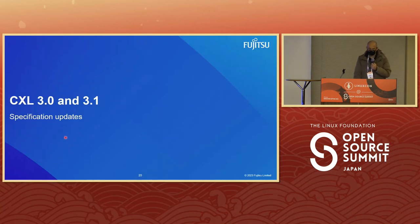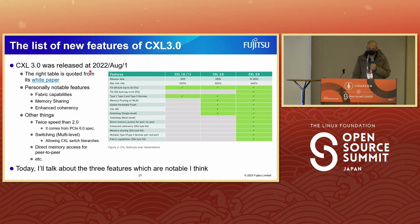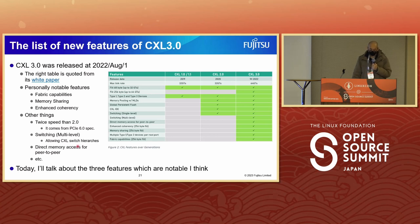Next section is CXL 3.0 and CXL 3.1 specification updates. Here is a list of new features of CXL 3.0, released one year ago on August 1st. The right table is quoted from the white paper. Personally, notable features are fabric capabilities and memory sharing and enhanced coherency. CXL 3.0 is twice the speed of 2.0, coming from the PCI Express 6.0 specification. Multi-level switching supporting CXL switch hierarchies is supported, and direct memory access for peer-to-peer is supported. Today I'll focus on three notable features.